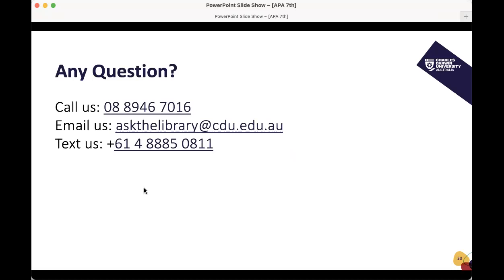Any questions, you can call or email Ask the Library — askthelibrary.cdu.edu.au. This is the preferred contact. You will come across some tricky referencing queries and things that don't make sense — that's fine. The librarians will pull out the big APA 7th book and try to find the answer. There's a lot of things not in the guide, but the most common things are covered. If you're unsure, just email Ask the Library and they can help you out. That's the end of the session — this presentation and PowerPoint will be sent to you. We'll see you next time.